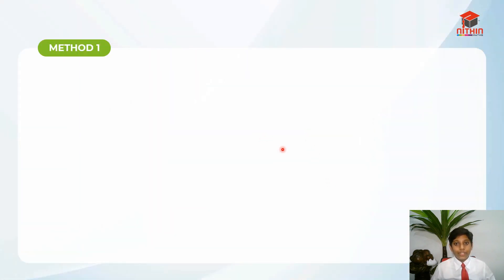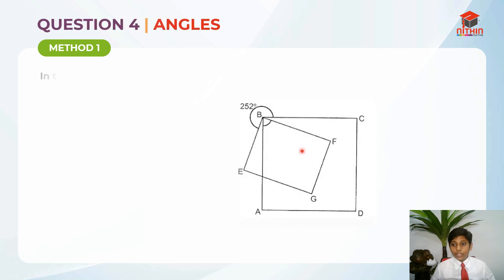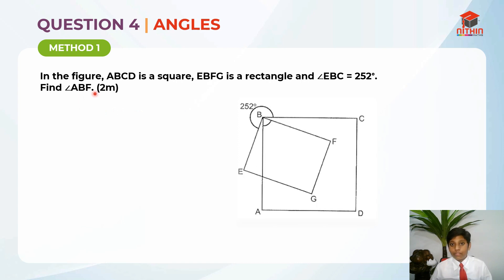Let's jump straight into question 4. Let's read the question first. In the figure, ABCD is a square, EBFG is a rectangle, and angle EBC is 252 degrees. They are asking, find ABF, the angle ABF. And this question is awarding us 2 marks.